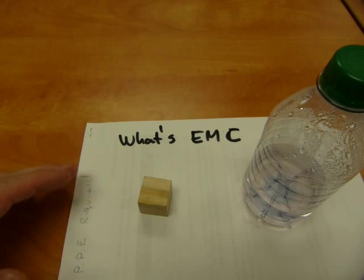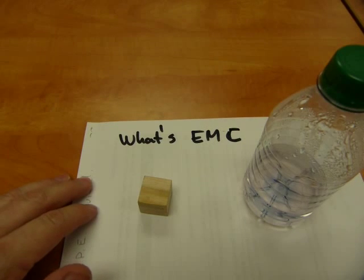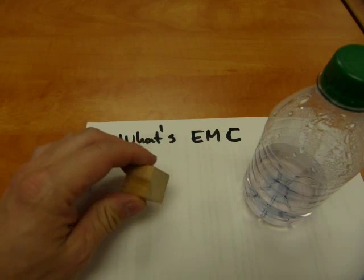Equilibrium moisture content, abbreviated as EMC, is a building technology term. It refers to relative humidity and building materials.